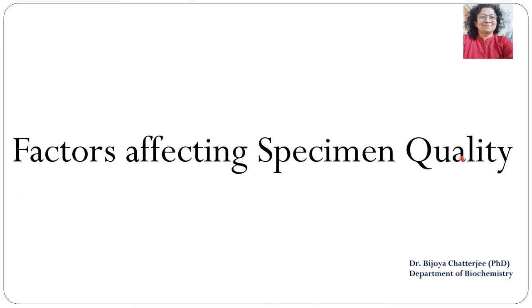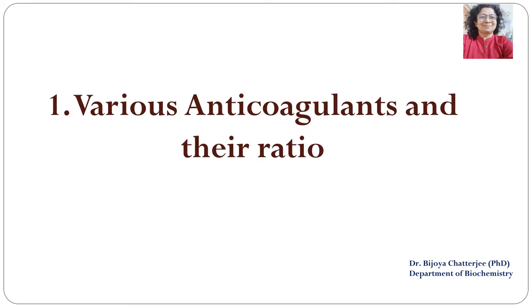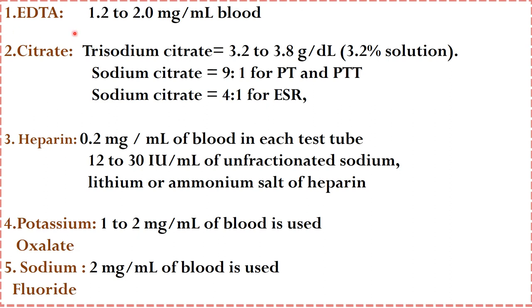Let us look at the factors affecting specimen quality. The first one is various anticoagulants and their ratios. For example, EDTA which has to be taken 1.2 to 2 milligrams per ml of blood, and if this ratio is not maintained then the blood components will be affected. There may be hemolysis and they may also interfere while carrying out the analysis.